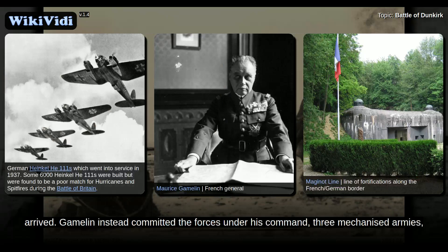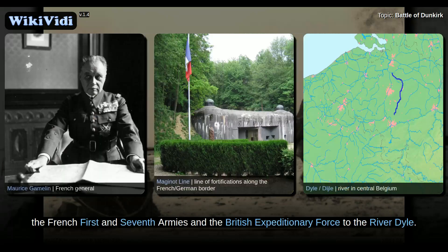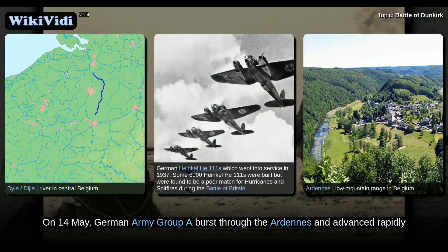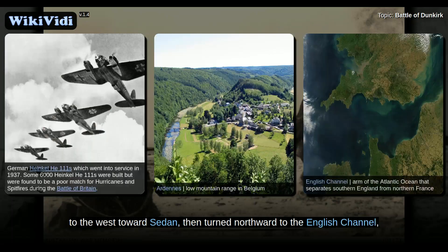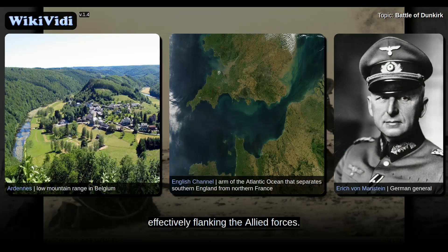Gamelin instead committed the forces under his command — three mechanised armies, the French 1st and 7th Armies and the British Expeditionary Force — to the River Dyle. On 14 May, German Army Group A burst through the Ardennes and advanced rapidly to the west toward Sudan, then turned northward to the English Channel, in what General Feldmarschall Erich von Manstein called the Sickle Cut, effectively flanking the Allied forces.